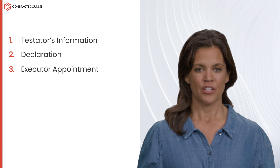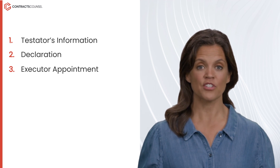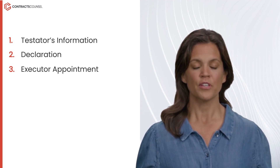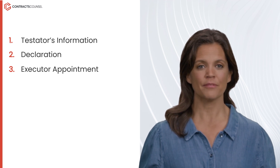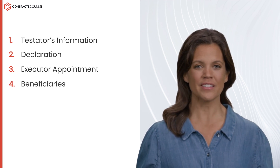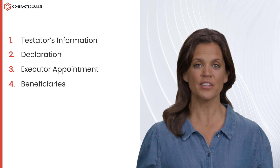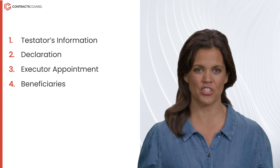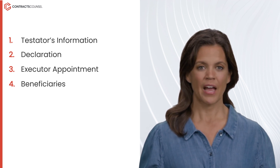Three, executor appointment: name the executor, the individual responsible for carrying out the instructions in the will, and may include an alternate executor if the first choice is unable or unwilling to serve. Four, beneficiaries: specifies the individuals or organizations who will receive assets, known as beneficiaries, and the details of the assets they will inherit.